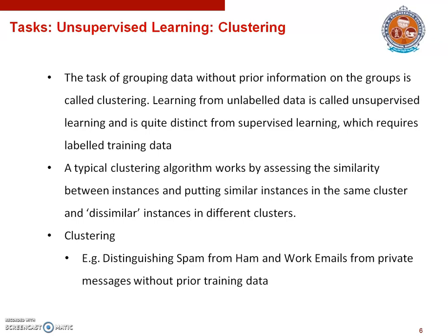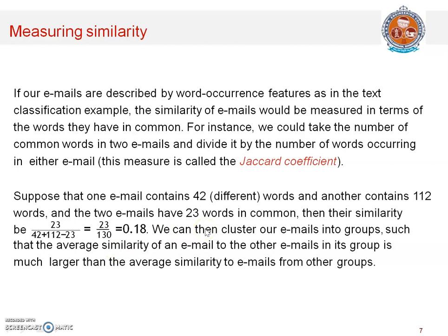A typical clustering algorithm works by assessing the similarity between instances, putting similar instances in the same cluster and dissimilar instances in different clusters. For example, if emails are described by word occurrence features, similarity could be measured by the words they have in common — specifically, dividing the number of common words by the number of words occurring in either email. This measure is called the Jaccard coefficient. Suppose one email contains 42 different words, another contains 112, and the two emails have 23 words in common; then the similarity would be 0.18.